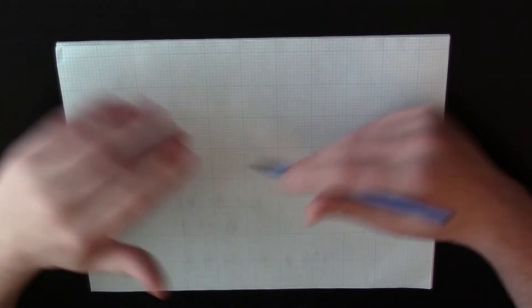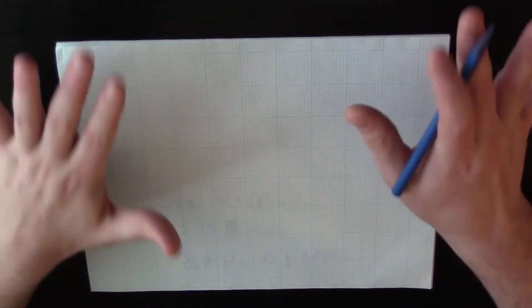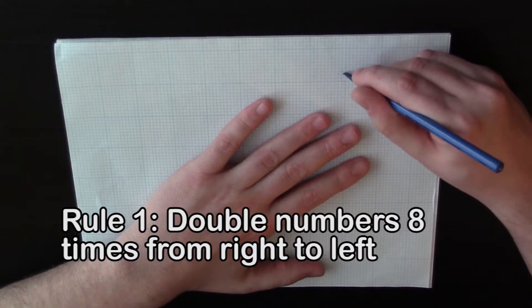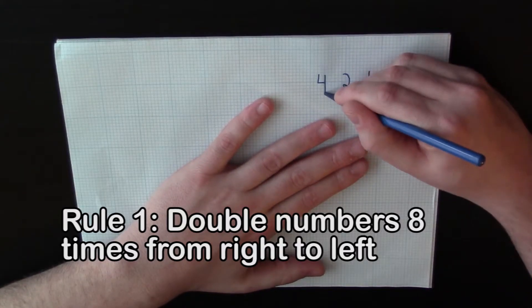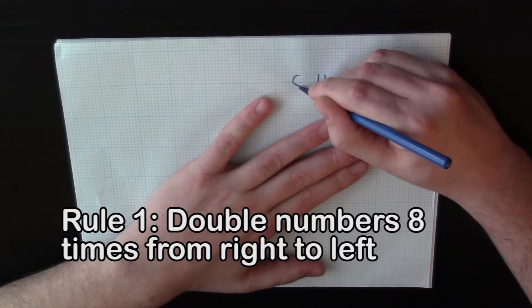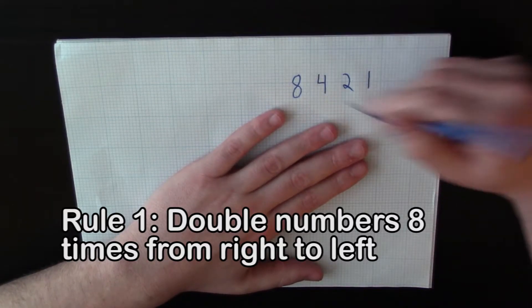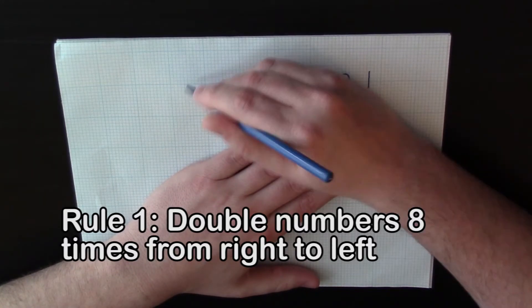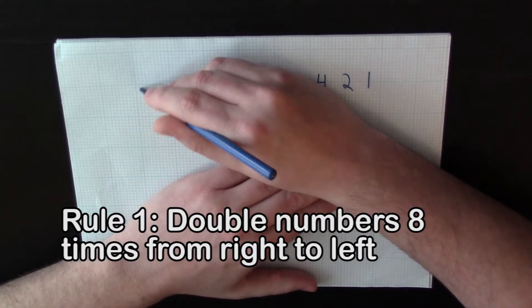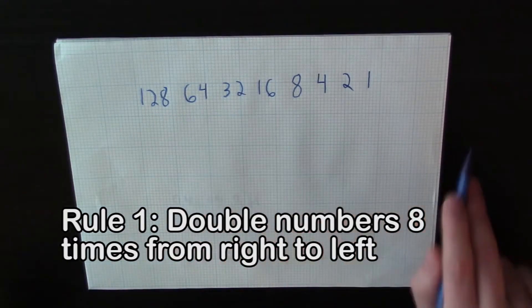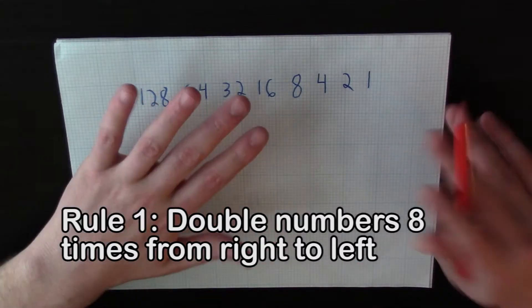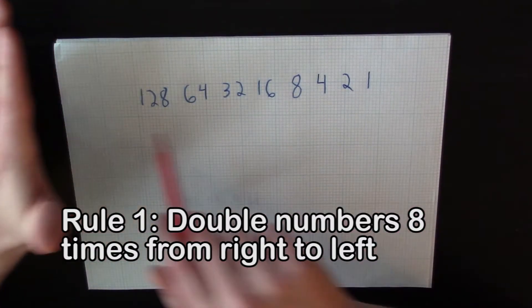Since we know that there are eight bits in a byte, to begin the binary set we are actually going to double numbers eight times. And what I mean by that is we're going to put one, double that you get two, double that you get four, and so on until you've done it eight times. So we have four, 16, 32, 64, 128. So that's the first rule that you have to remember in order to read and write binary: take one and double it eight times.